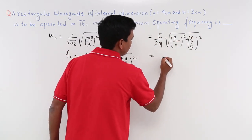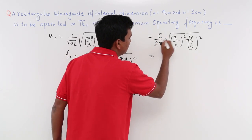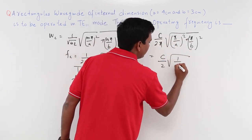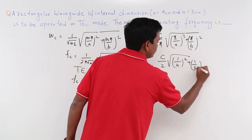I will take pi common. So the pi square will come out, pi pi get cancelled. So it will be c by 2 root over 1 by A the whole square plus 1 by B the whole square.